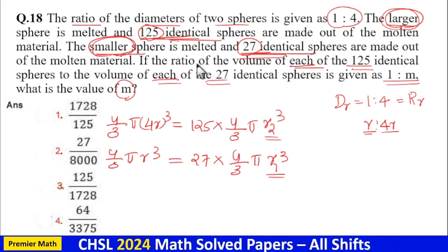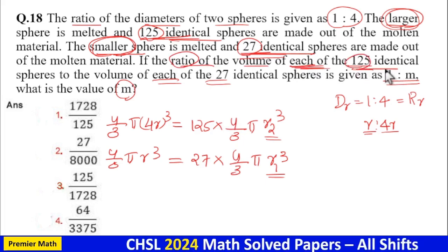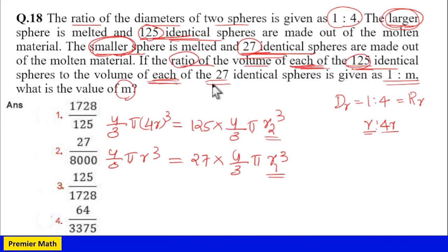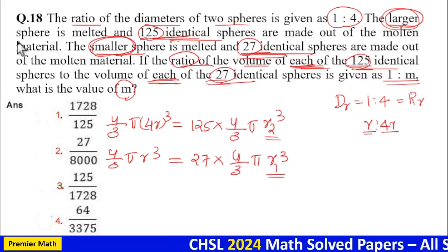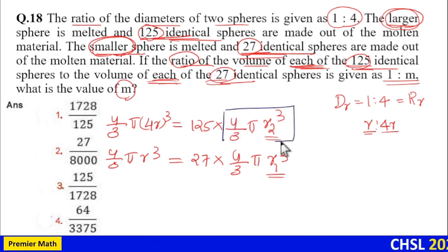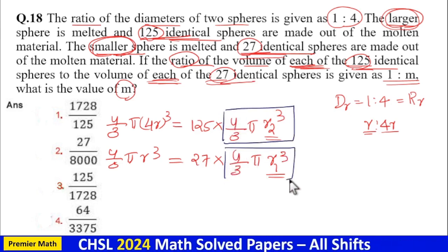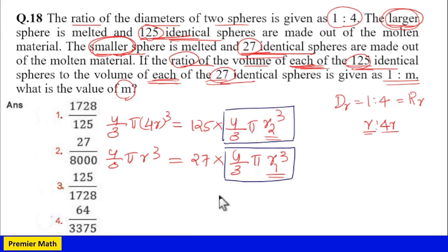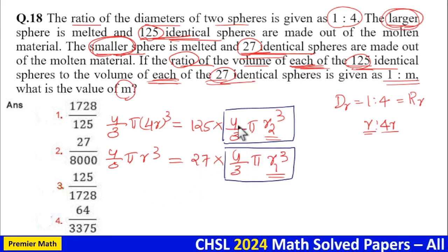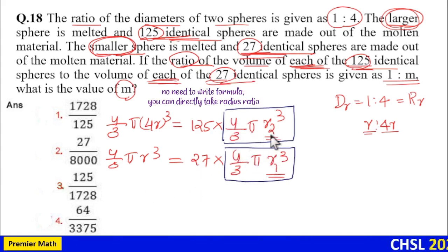The question asks us to find the ratio of the volume of each of the 125 identical spheres to the volume of each of the 27 identical spheres. That is, we need to find (4/3)π × r2³ divided by (4/3)π × r1³. The (4/3)π terms cancel out.